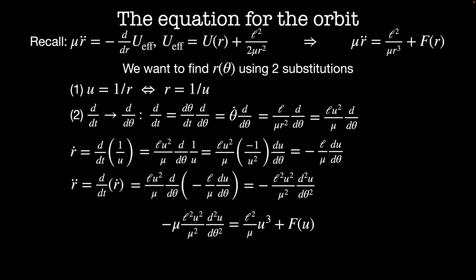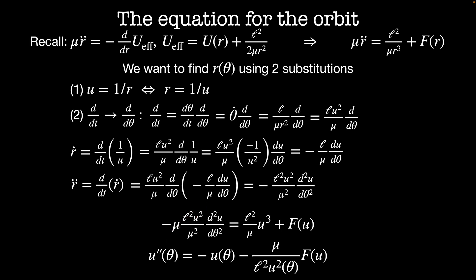Then our equation of motion becomes: mu times r-double-dot equals L squared u squared over mu squared times d²u/d-theta², which equals the centripetal force L squared over mu times u cubed plus the central force as a function of u. If I divide through by the constants, I end up with u''(theta) equals minus u(theta) minus mu divided by L squared times u(theta) squared times the central force as a function of u.